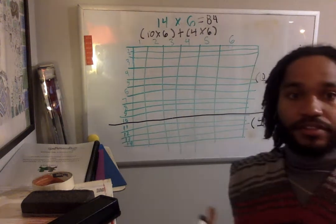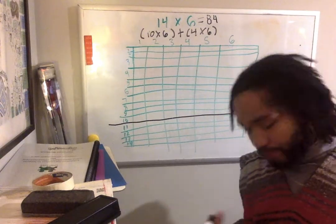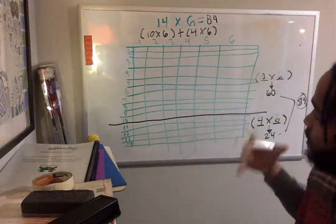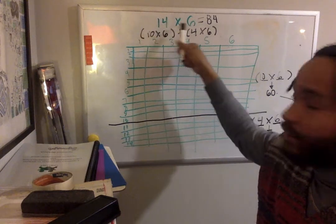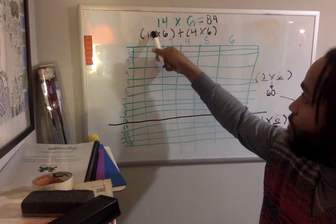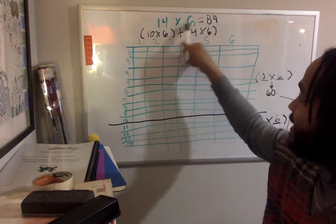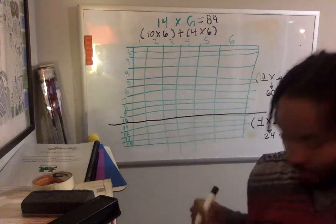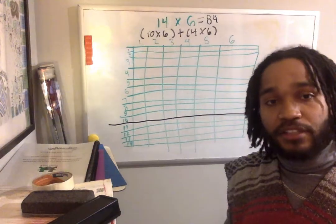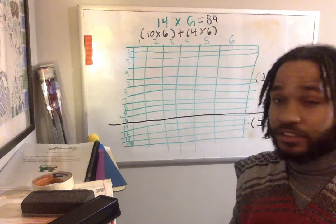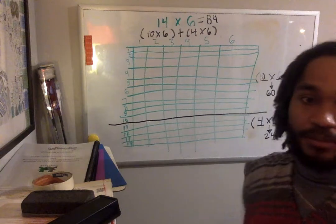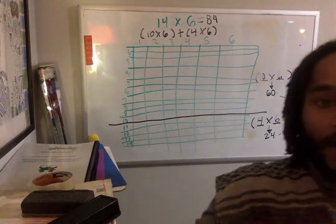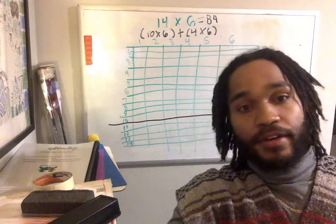So this is the distributive property, but also it's taking larger equations, breaking up one factor. That 14, I broke up into a 10 and a 4. And that second factor stays the same to find bigger multiplication equations. It's a really, really good skill, especially when you get to 2-digit times 1-digit numbers. All right. So rewatch the video. I hope this was helpful. Peace.